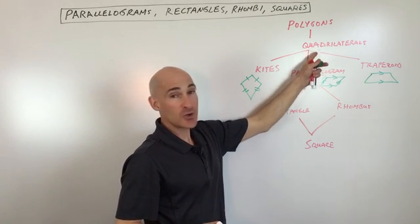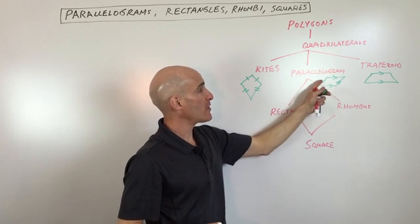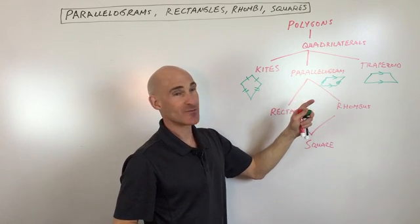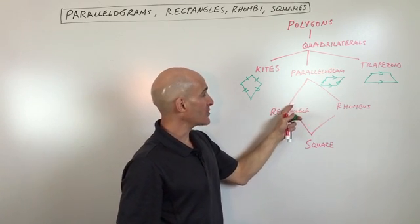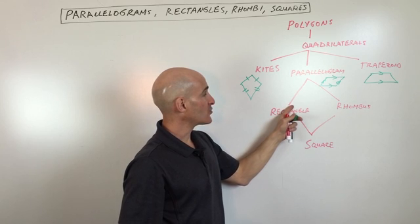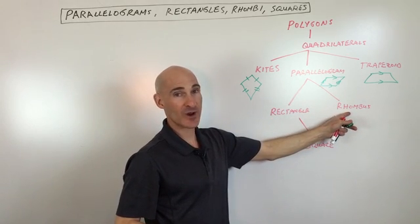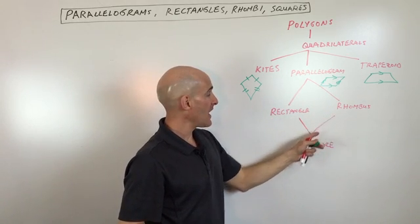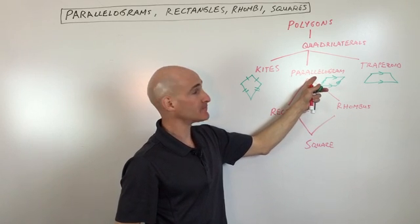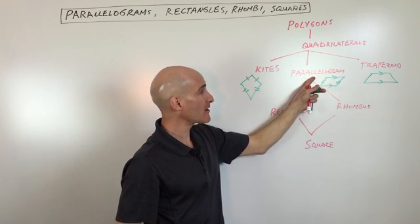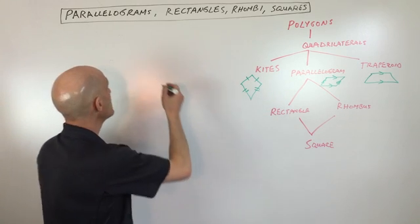Continuing on, we're focusing on parallelograms where you have two pairs of opposite sides parallel, and then you can subdivide down from there. You can subdivide down to rectangles and rhombuses — or rhombi — and then squares. But let's start with parallelograms and go through their different properties.